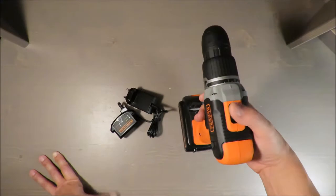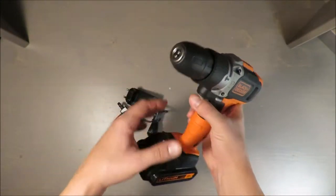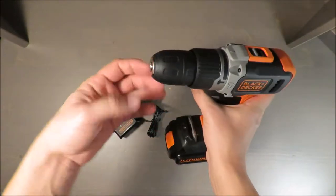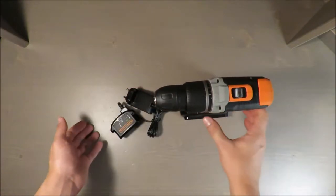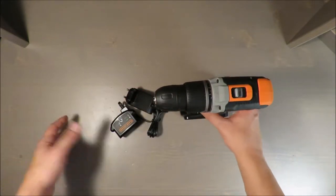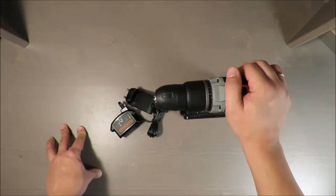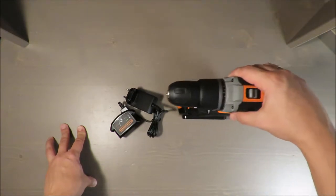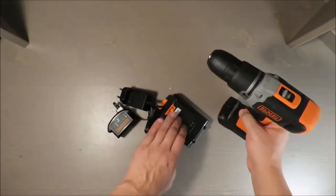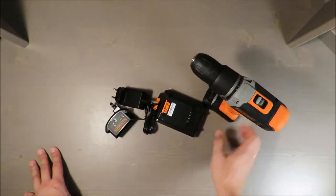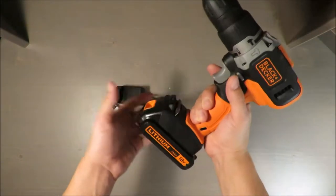It's a two-speed drill, so you can go up to 650 RPM. Max torque is 30 Newton meters, and in terms of drilling it's 25 millimeters in wood and 10 millimeters in steel.